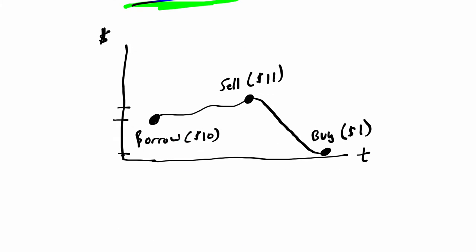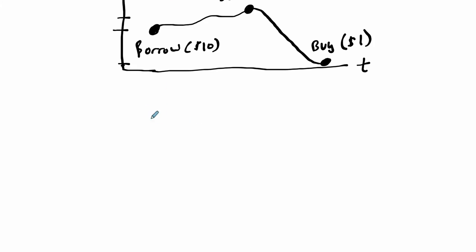What would this essentially mean? Well, this would mean that your income, you sold it for $11. That's your income. You didn't have to buy the stock in the first place. You had to borrow it. But then you bought it back for $1. So minus your cost. And that means that your income minus your cost or your revenue minus your expenses is your profit. So in this case, you're making $10.